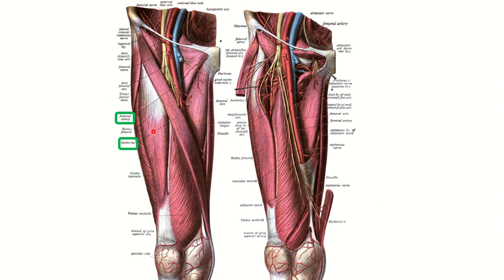Here we can see the femoral artery in the femoral triangle. Within the femoral triangle, the femoral artery is visible. For a femoral popliteal bypass, the surgeon needs to access the distal part of the femoral artery beyond the triangle.